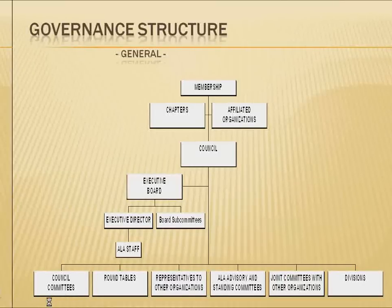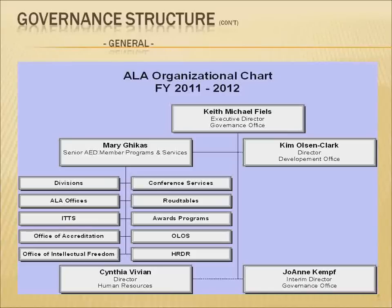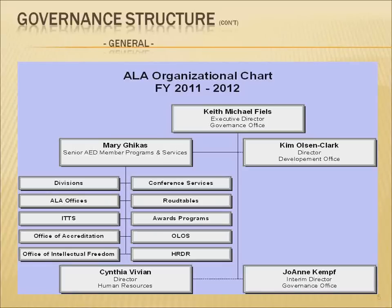Looking at the way the membership organizes itself, it's also important to understand the way the staff of ALA is organized. We work through an executive director, Keith Michael Fields. He has working with him Mary Geekes, who oversees all the member programs and services, and you can see those listed under her name on this chart. We've been building over the last several years a major development and fundraising capacity, and Kim Olsen-Clark is the director of that office. Cynthia Vivian runs human resources, and Joanne Kempf is the interim director of the governance office.